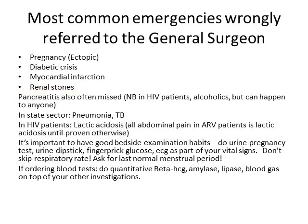Renal stones can also cause quite severe abdominal pain, so keep that in mind. Another thing I've noticed University of Pretoria students miss is pancreatitis, which is important in our HIV patients. An HIV patient with mild abdominal pain might actually have pancreatitis — if you send them home as gastroenteritis, they might worsen and die. Alcoholics can get pancreatitis, but it can happen to everyone. Always do pancreatic enzymes — amylase and lipase — when ordering blood tests for severe abdominal pain.